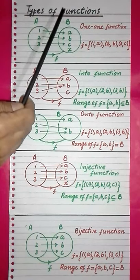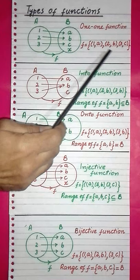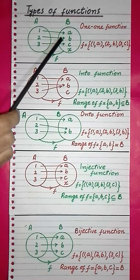Types of functions. A function is one-one if the second elements of all ordered pairs of the function are non-repeated. Like here, the second elements are non-repeated.